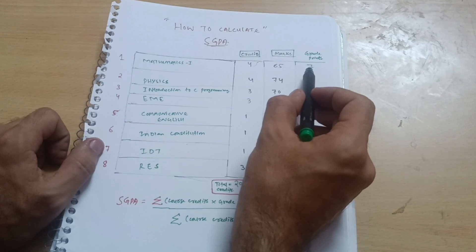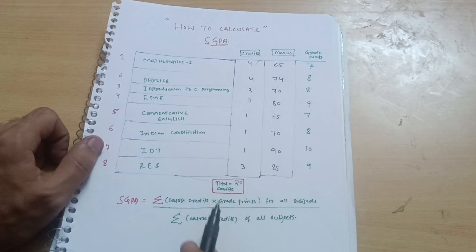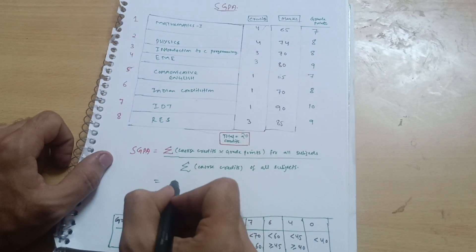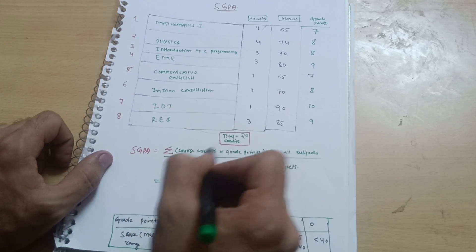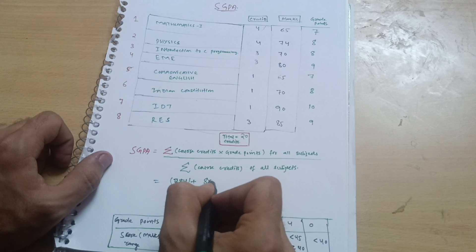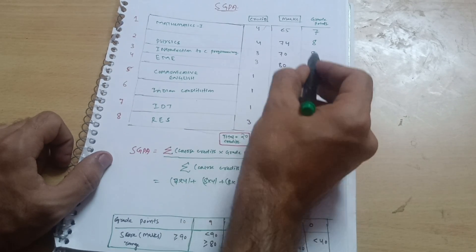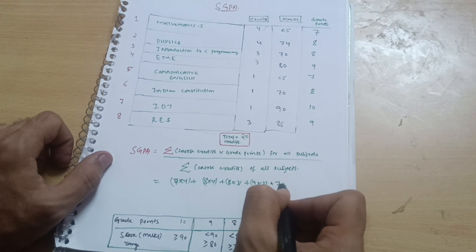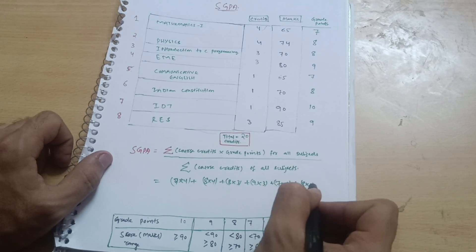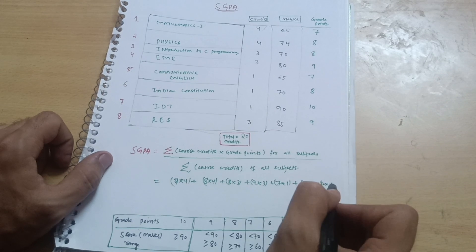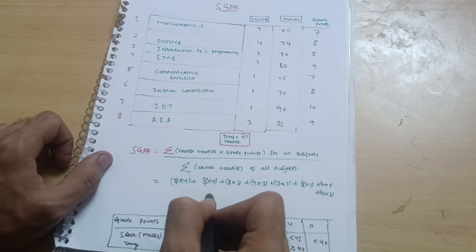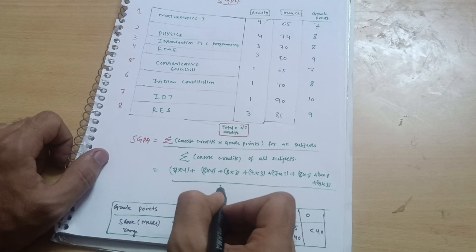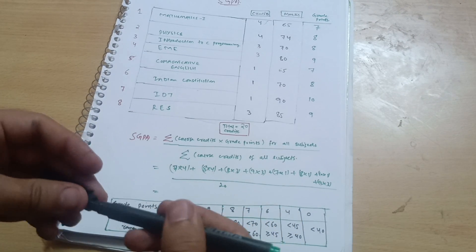Now you have to multiply: 7×4 + 8×4 + 8×3 + 9×3 + 7×1 + 8×1 + 10×1 + 9×3. This is the summation of course credits into grade points. Then divide by the total number of credits, which is 20. Let me now calculate this.